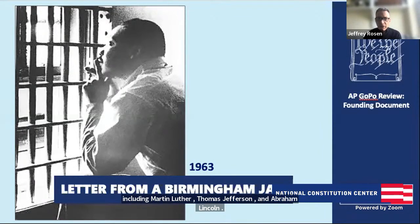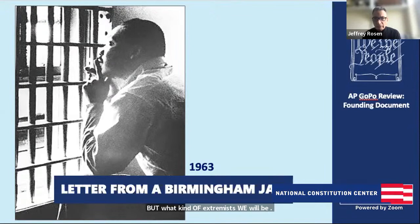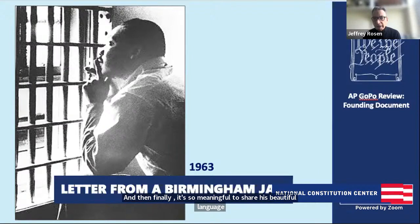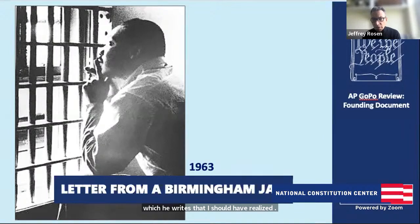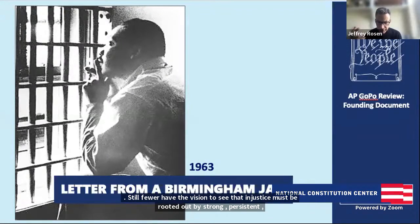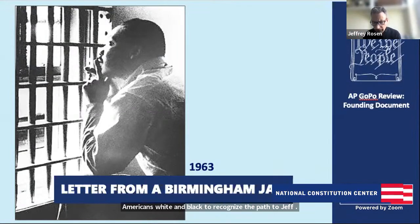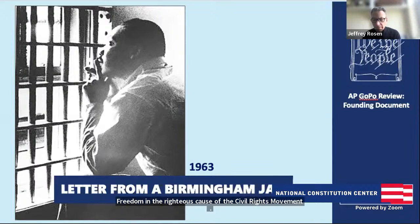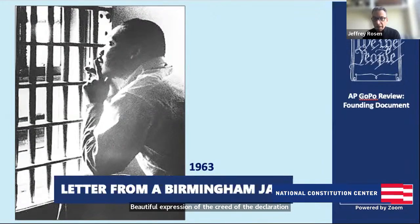King writes that he should have realized that few members of a race that has oppressed another race can understand the deep groans and passionate yearnings of those who have been oppressed. Still fewer have the vision to see that injustice must be rooted out by strong, persistent, and determined action. He calls on all Americans, white and Black, to recognize the path to justice and freedom in the righteous cause of the civil rights movement — a beautiful expression of the creed of the Declaration, his devotion to nonviolence which he got from Aquinas, Thoreau, and Mahatma Gandhi, and the Greek notion of agape and universal love.